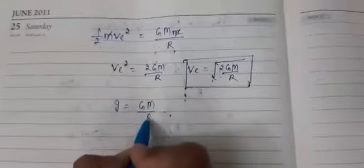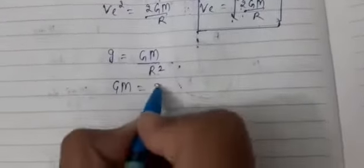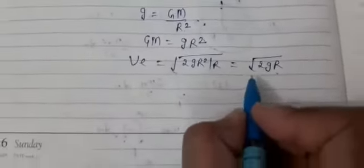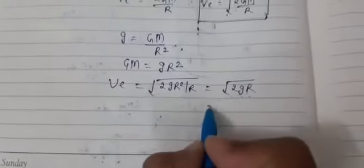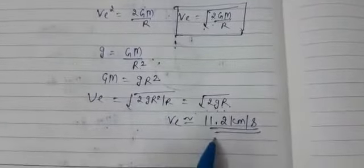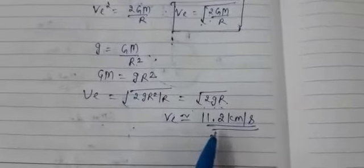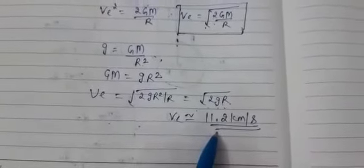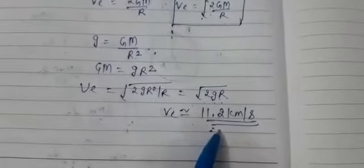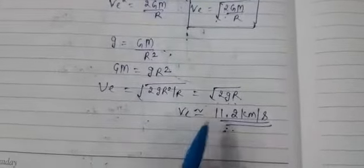Expressing escape velocity in terms of small g: since g = GM/R², we get GM = gR². Substituting gives Ve = √(2gR). Putting in values for g and R, the escape velocity of earth comes out to be 11.2 km per second. This value depends only on the planet, not on the mass of the object being projected.